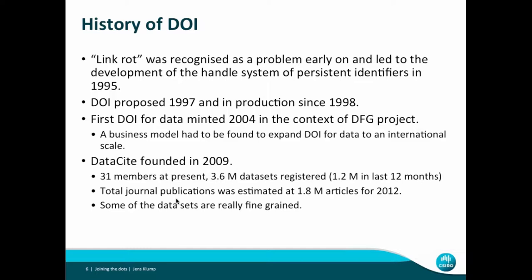International scale meant that the original service provider, the German National Library for Science and Technology, was a bit of a problem — the French, Swiss, and other national libraries were uncomfortable using a German national library as their service provider. So something else had to be found, and that was DataCite. DataCite was founded in 2009 as an organization to govern the system of digital object identifiers for data. It has 31 members today.